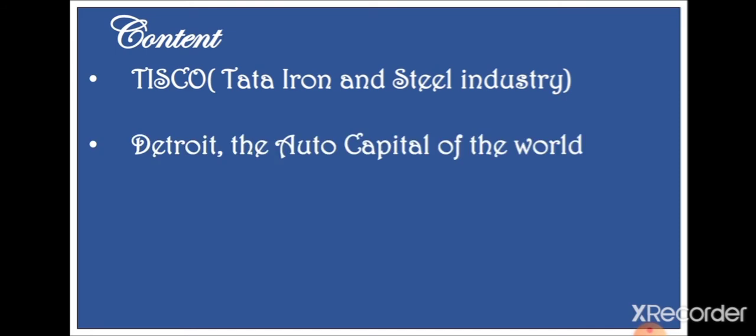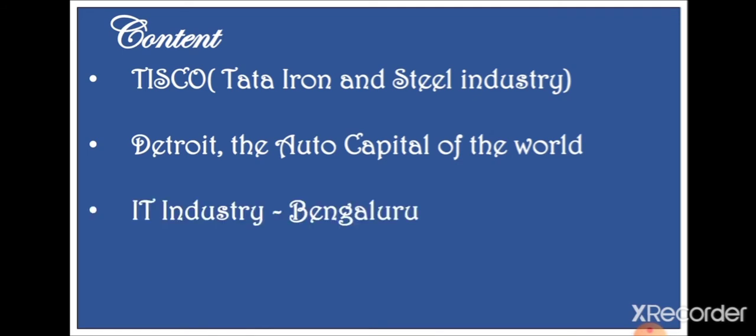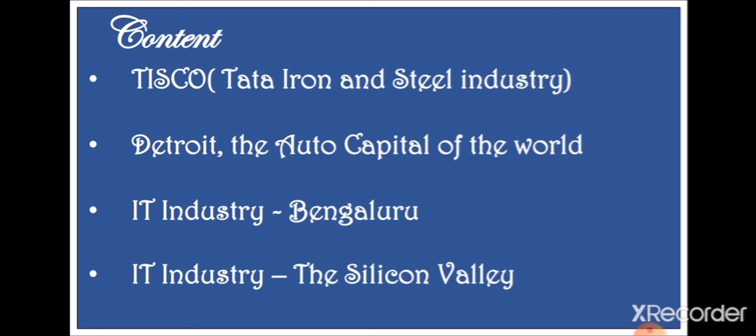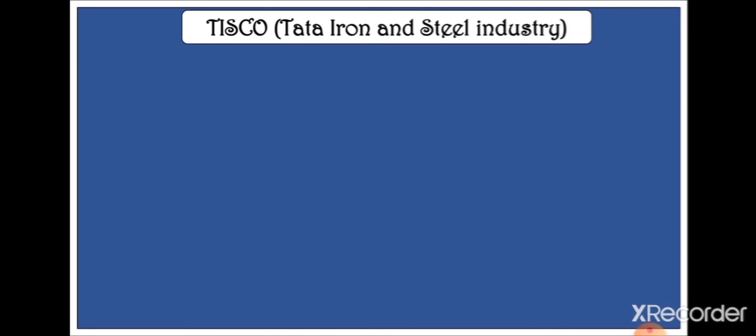In this chapter we are going to learn about four industries: the third one is the IT industry of Bangalore and the fourth one is the IT industry of Silicon Valley in California. So in this first part I am only going to explain TISCO, that is Tata Iron and Steel Industry, and Detroit, the auto capital of the world. In the second part I will cover the IT industries of Bangalore and Silicon Valley. Let us start with TISCO.